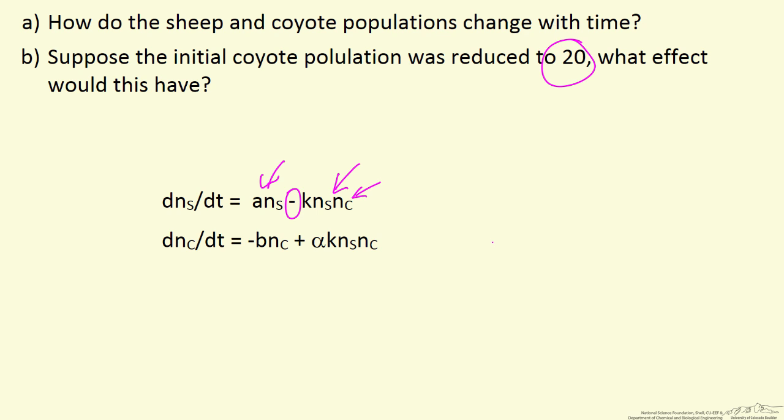Again, a simplified model. For coyotes this says as the number of coyotes increase, the rate that they'll start decreasing is faster, dying off.